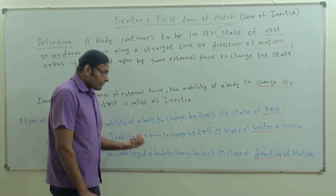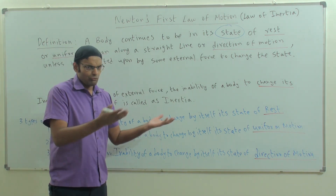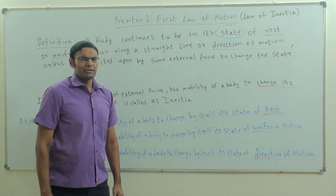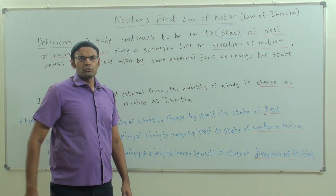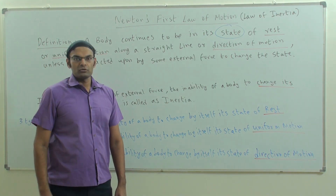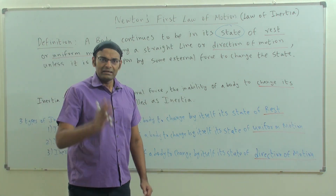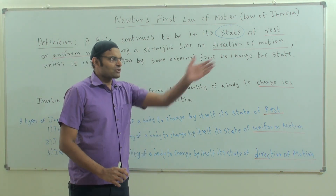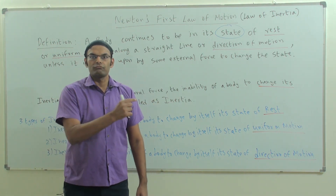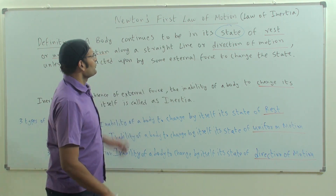Inertia of motion is the inability of a body to change by itself its state of uniform motion. A ball rolling over a floor at 10 meters per second continues to move at 10 meters per second unless an external force acts on it. Similarly, inertia of direction: a body moving at 10 meters per second in a particular direction cannot change its direction unless an external force acts on it.